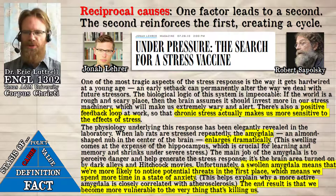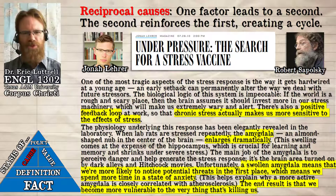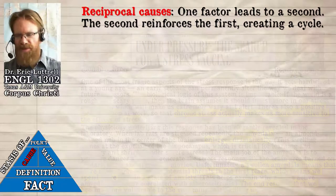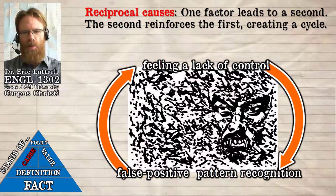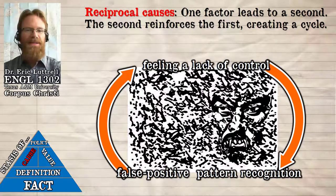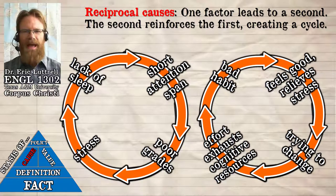A swollen amygdala means we're more likely to notice potential threats, which means we spend more time in a state of anxiety. Stressing out more makes us better at stressing — it's like exercise for a part of your brain you don't want to be stronger. The end result, as he says, is that we become more vulnerable to the very thing that's killing us. It's similar to false positive pattern recognition: when people feel a lack of control, they're more likely to see threats that aren't there, and seeing those threats makes them feel even less in control, which makes them see more threats.